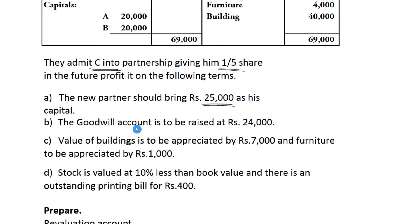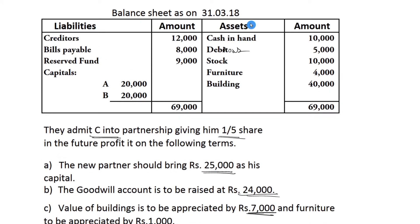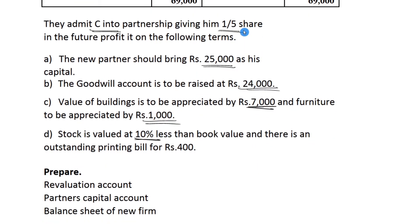C brings in $25,000 capital. Goodwill is to be raised at $24,000. Value of the building is to be appreciated by $7,000, and furniture is to be appreciated by $1,000. Stock is valued less than book value - 10% reduction. Outstanding printing bill is $900, and $400 outstanding bill payable. Next, balance sheet.